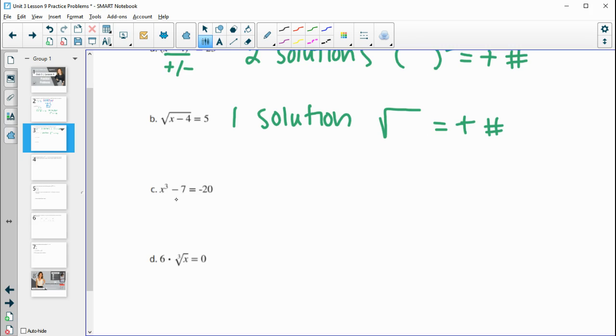And x cubed, we can add 7 to both sides and get x cubed equals negative 13. This one's also going to have one solution because when it has an odd degree exponent, if you put a positive cubed, it's positive. If you put a negative cubed, it's negative. So you're only going to get one solution when you have something cubed equal to a negative number.